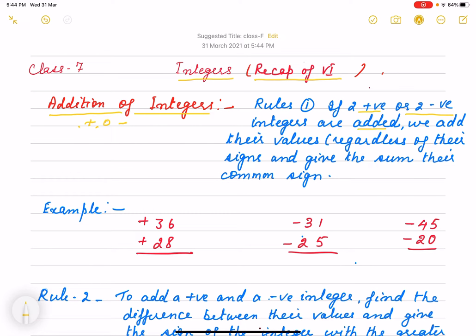When negative integers are added, we add their numerical values without considering the sign. First we add, and then in the sum we use that common sign. Let me show you how to add.